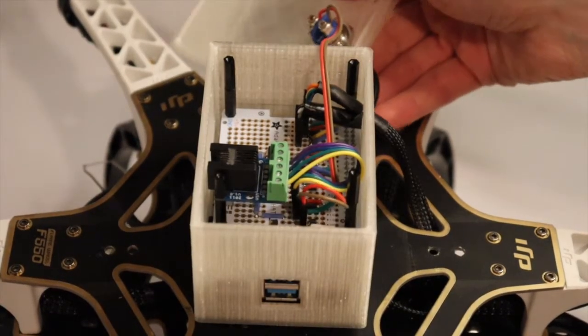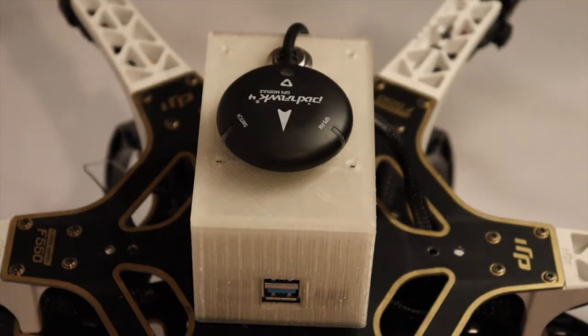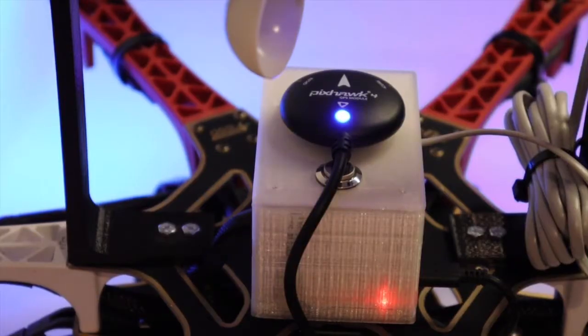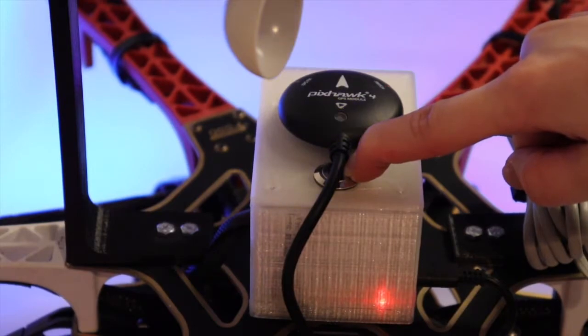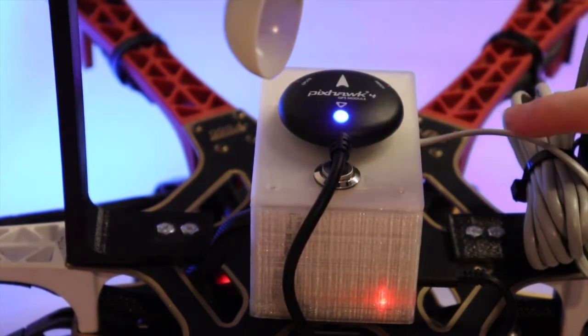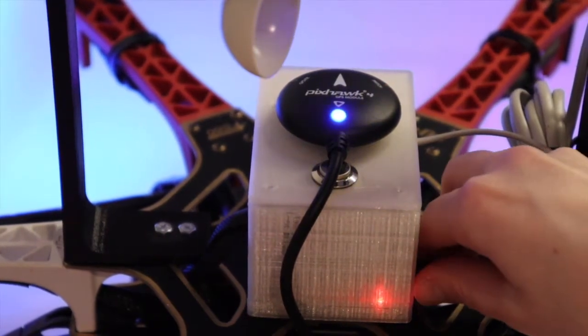One important note about the Raspberry Pi is that the SD card can be corrupted if the Pi is not shut down properly. To cleanly shut down the Pi, hold the silver button for 3 seconds. The green LED will blink, indicating SD card activity. Once the LED stops blinking, the Pi is shut down and it is safe to unplug the power supply.